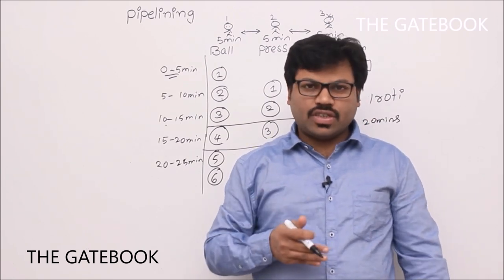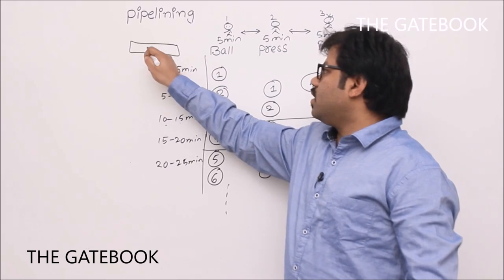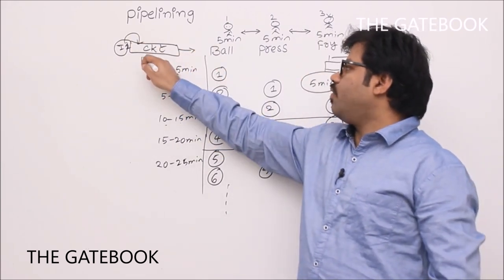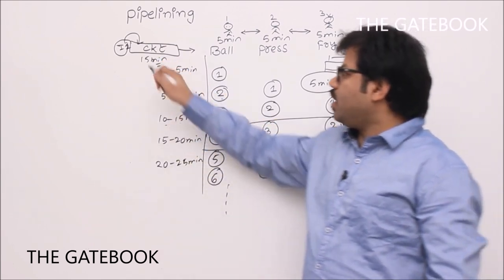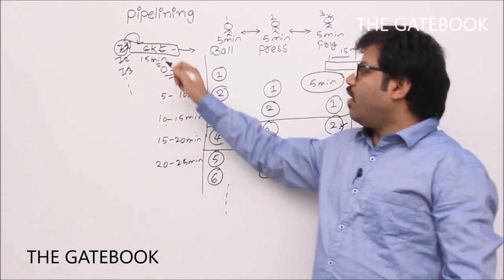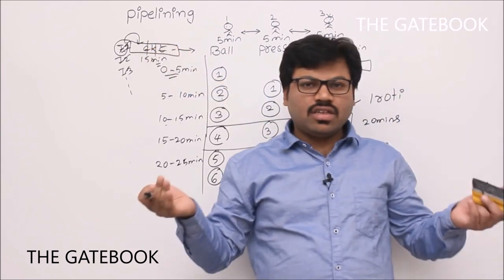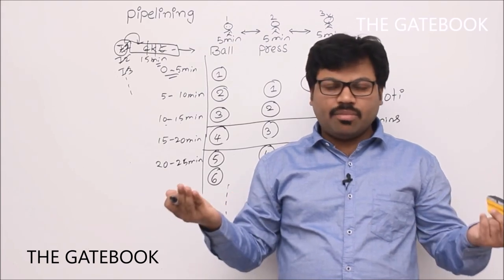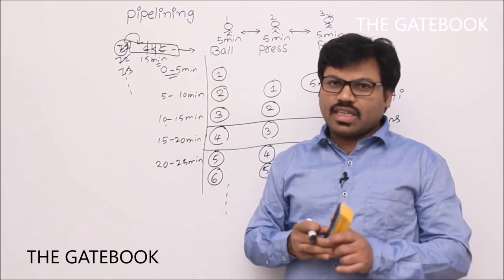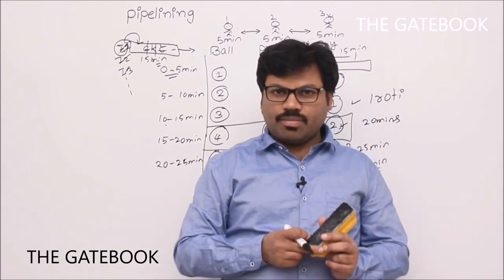We now apply the same idea to instruction execution. The instruction execution circuit — when you give instruction one it executes, let's say, in 15 minutes. Rather than feeding instruction one, then instruction two, then instruction three serially — each taking 15 minutes — we divide the circuit into stages and make sure every stage works at the same time to get a performance benefit. The entire story of pipelining is how effectively we give work to all stages. There are some problems to solve too, which I will explain.